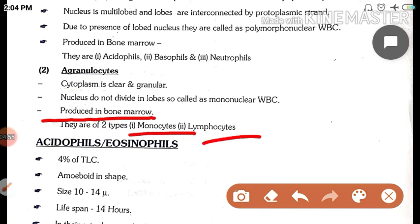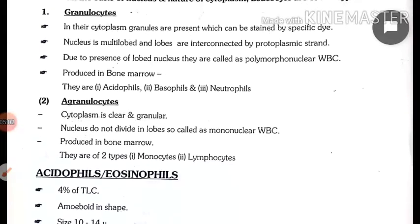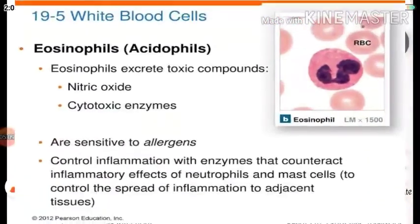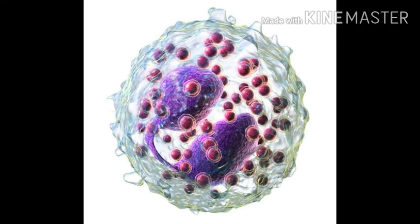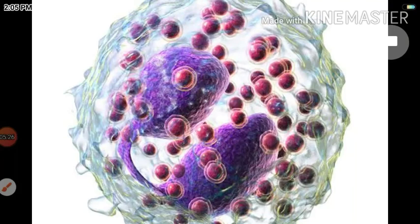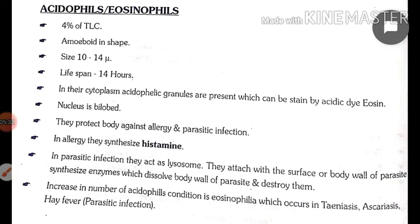Monocytes and lymphocytes. Ab baat karte hain acidophils — eosinophils — jo granulocytes ka pehla part hai. Inhe eosinophils bhi kehte hain — 4% of total TLC. Shape amoeba ke aakaar ka hoga. Size 10–14 micron. Life span 14 ghante tak. In their cytoplasm acidophilic granules are present, which can be stained by acetic eosin dye — isse color kar sakte hain.